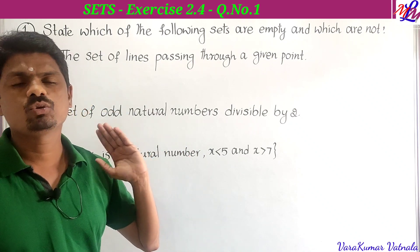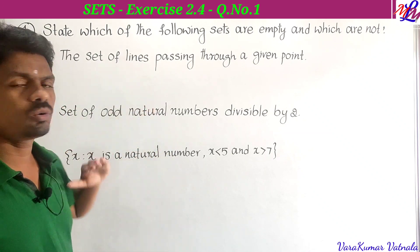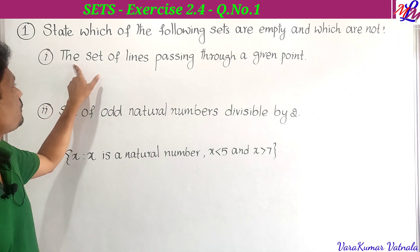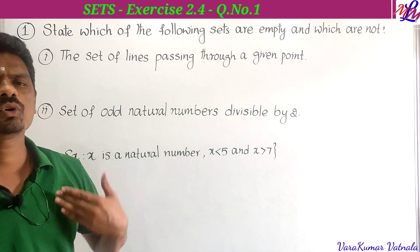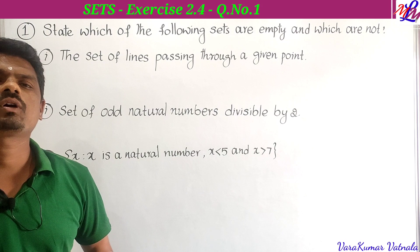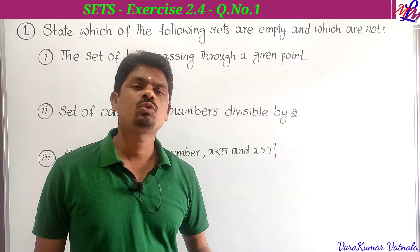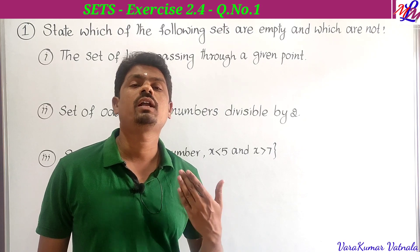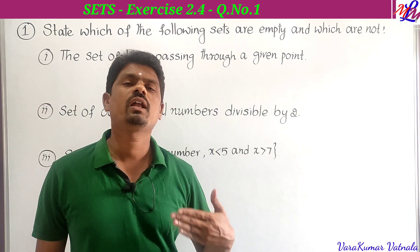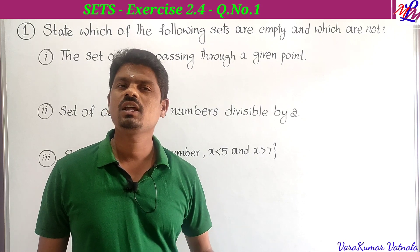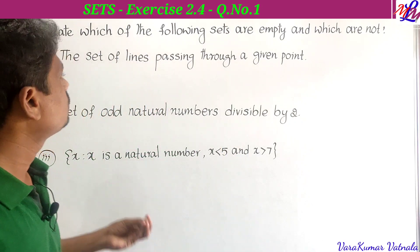In the first problem there are five bits. Before solving, you must have a clear idea about the empty set. A set which has no elements in it is called an empty set. As the name says, there will be no elements, so it is empty.